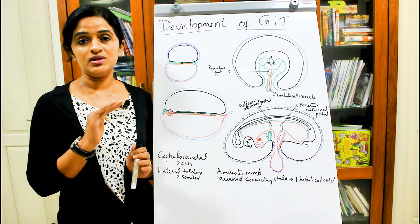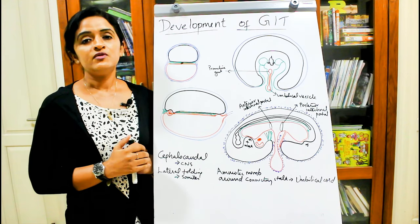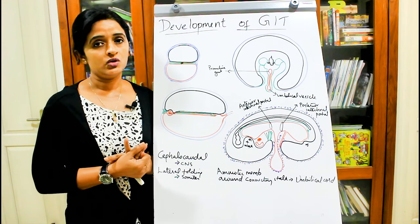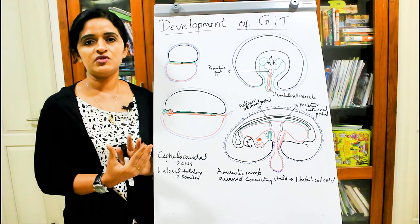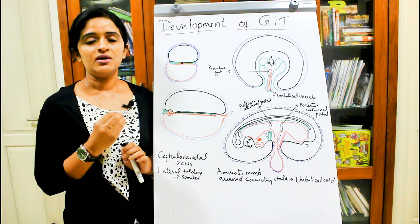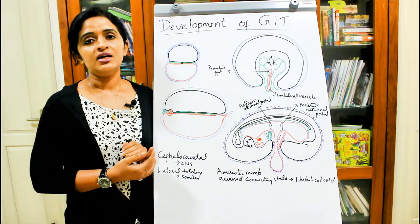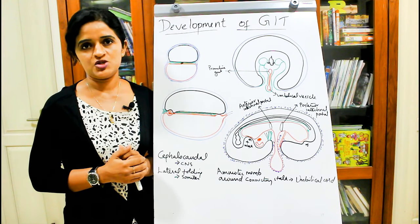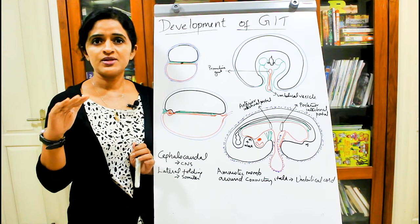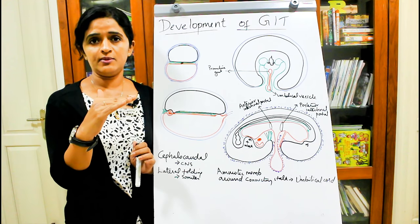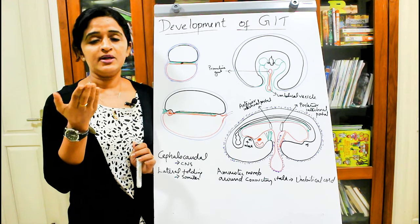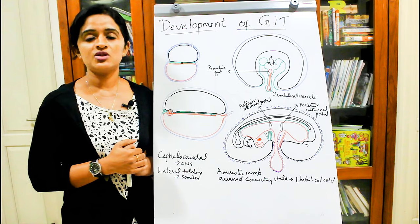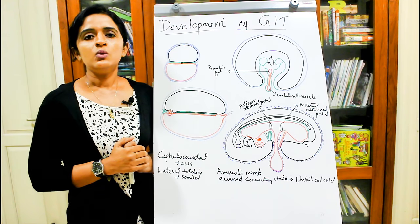In the beginning, the embryo is in the form of a disc. By the end of the third week there is formation of the trilaminar germ disc, followed by development of the intraembryonic mesoderm, notochord, and neural tube. The embryo is like two slices of bread with butter in between — the ectoderm and endoderm are the bread, and the intraembryonic mesoderm is the butter.